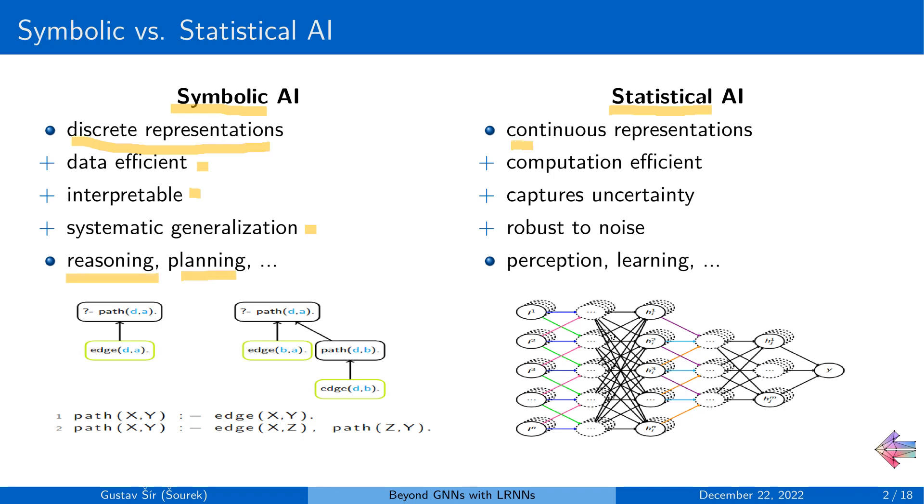And then on the other hand, we have the continuous representation from the statistical or neural approaches, which are typically computationally efficient, and they are able to handle uncertainty and noise. And these are being used in pretty much all of machine learning these days.